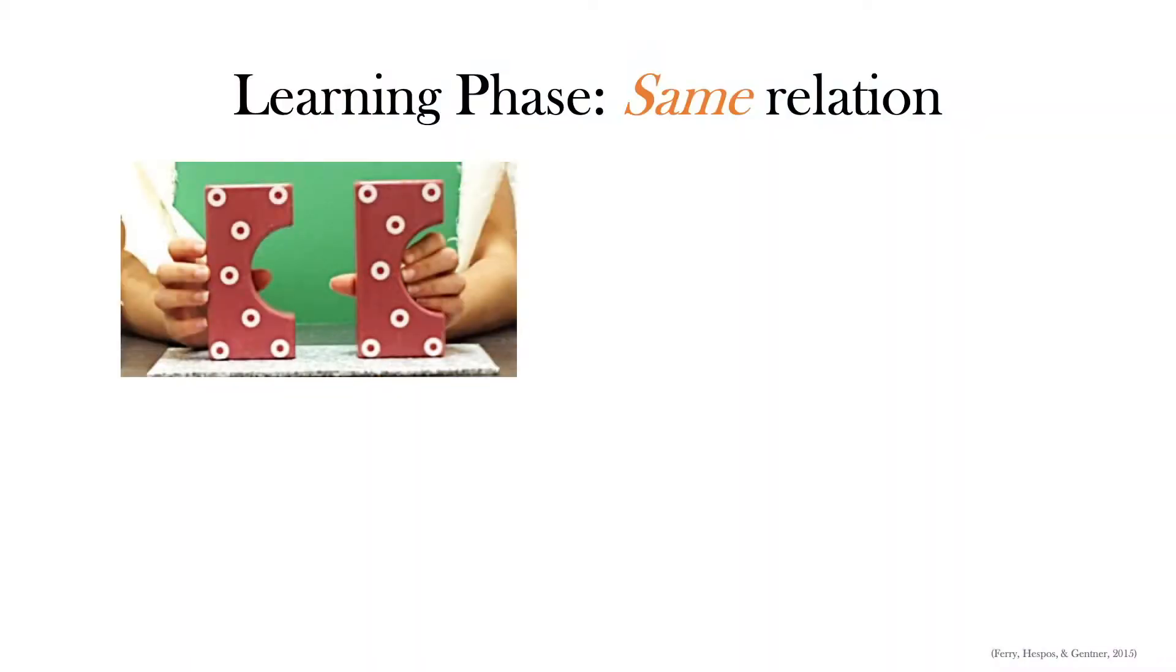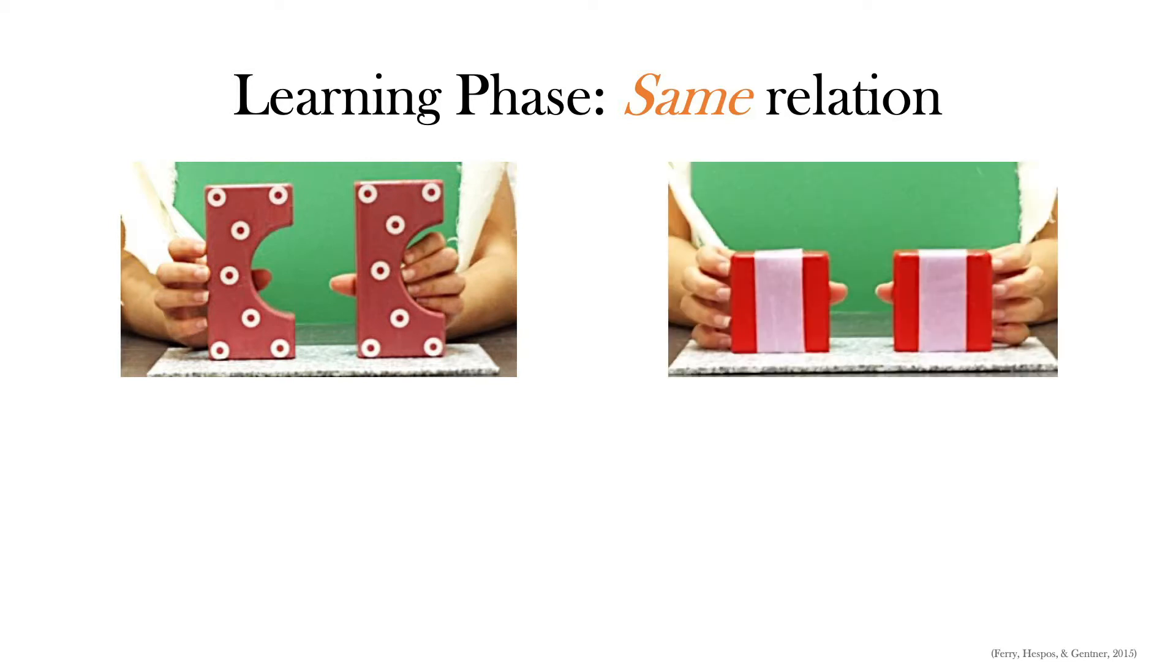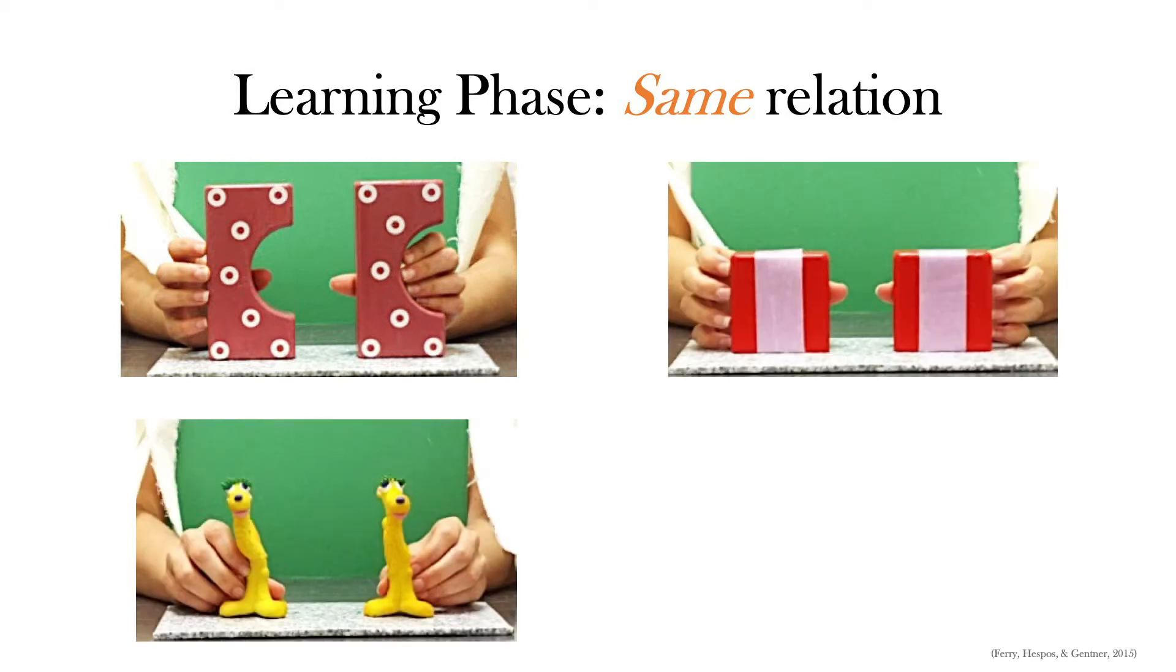So what do we show them? We show them multiple pairs of objects that are exactly the same as each other. Or in other words, we show them pairs of objects that share the relation of same. They first see this pair until they get bored and look away. Then they see that pair, the third pair, and then the fourth pair.